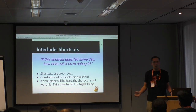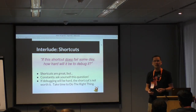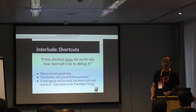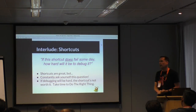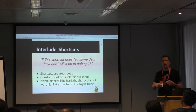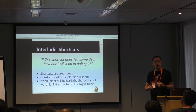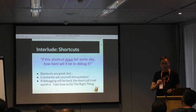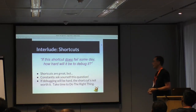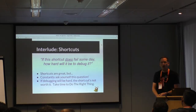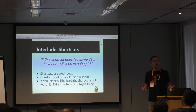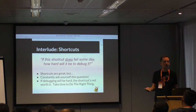I love shortcuts. Shortcuts are fantastic for getting a piece of code out quickly, getting your functionality done, getting your bug fixed, getting your feature working. But you always have to ask this question: if my assumptions are violated and this shortcut turns out to be a little bit too short, then how hard is it going to be to debug the result? Is it going to blow up in a spectacular and obvious way, making it really clear where the problem was and easy to fix?